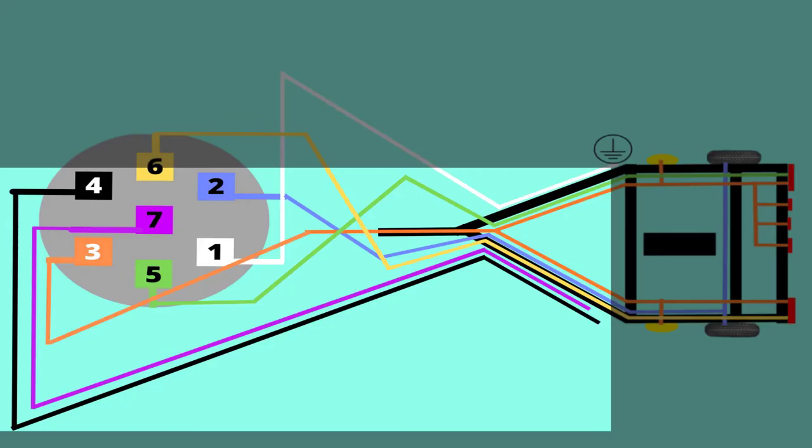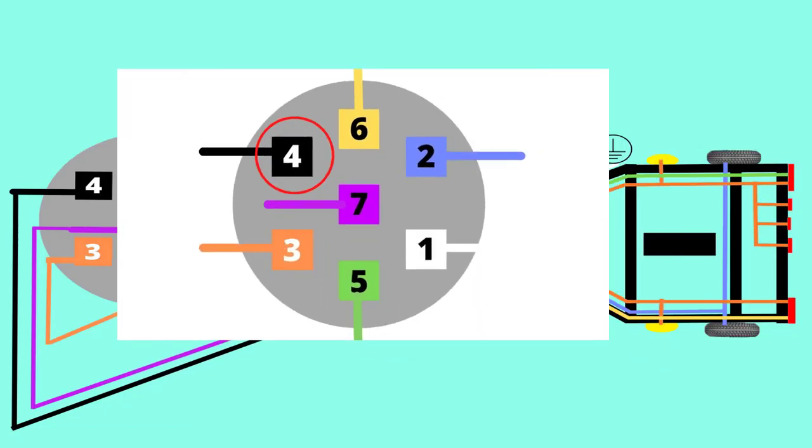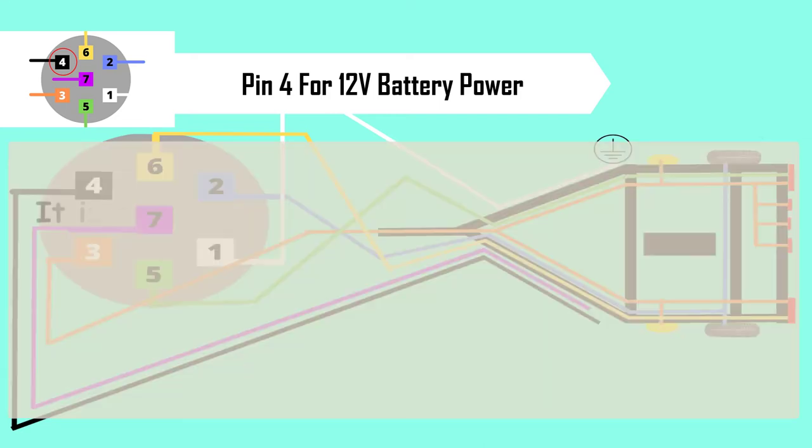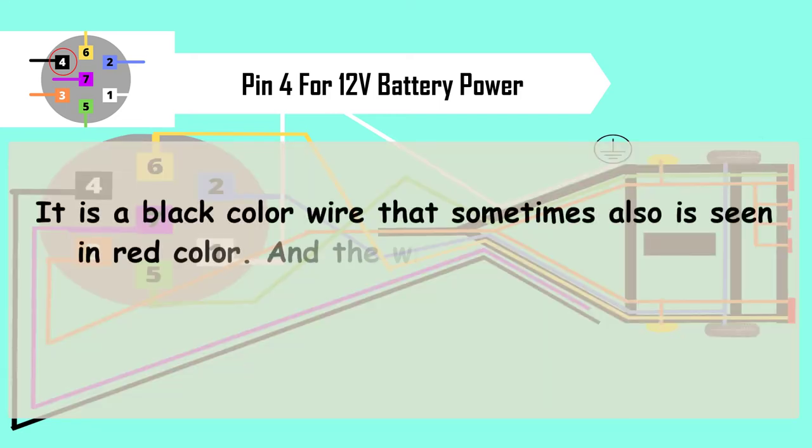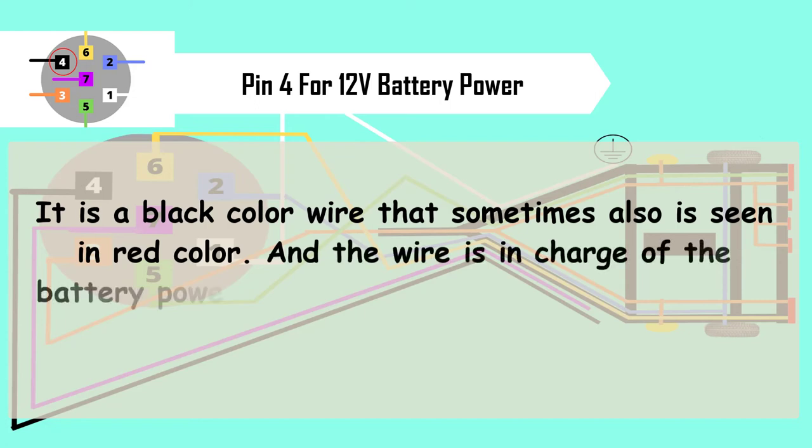Pin 4 is for 12V battery power. It is a black color wire that sometimes also is seen in red color and the wire is in charge of the battery power that goes for display light and all computers.